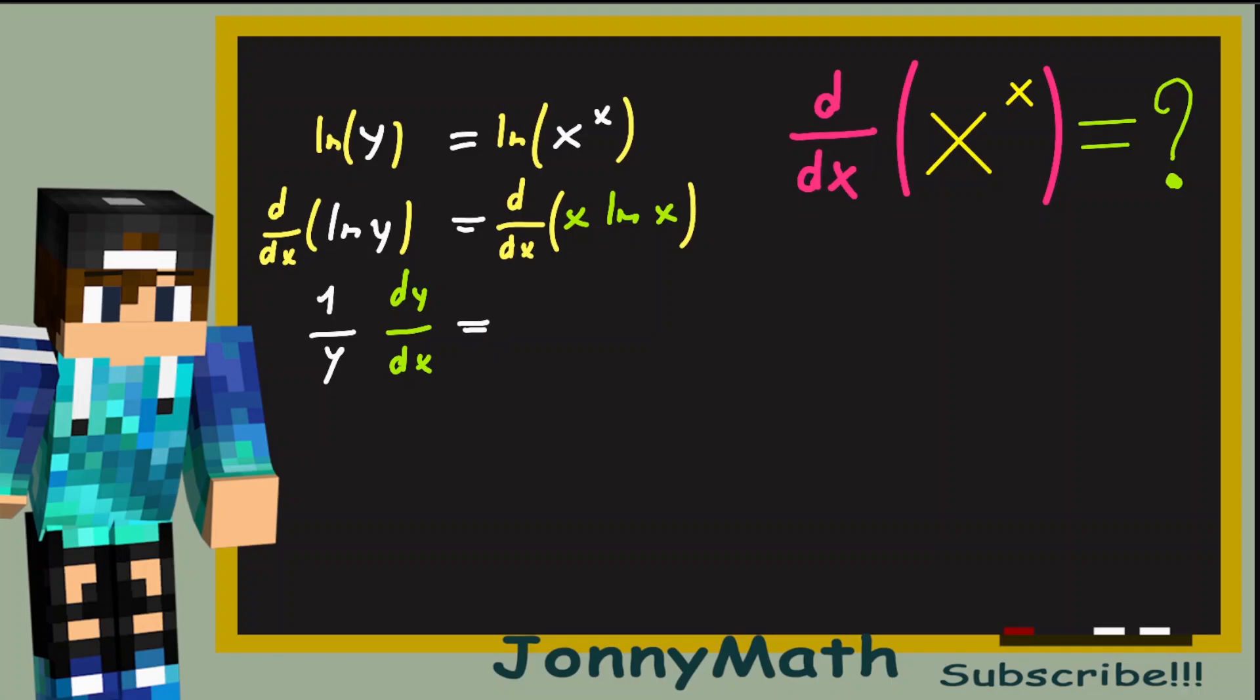And this equals the derivative of x times the natural log of x. Here we can apply the product rule. So this is just d over dx of x times the natural log of x plus d over dx of the natural log of x times x.